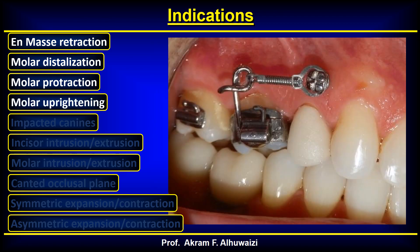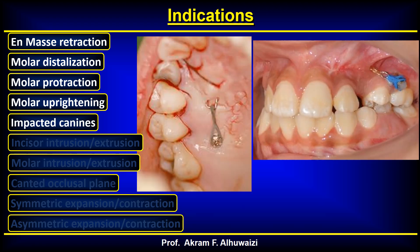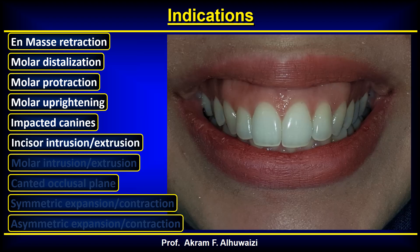Molar uprighting can also be done using a power arm, in which you tilt the roots and tip the crown distally. Impacted canines can benefit greatly from TADS, whether palatally or partially impacted. It is advisable to retract the canine before even bonding, because if you bond the lateral incisor and the root comes out, it may hit the impacted canine. When impacted canines are very close and palatal to the root of the lateral, it is better to retract them first and then begin extruding them.